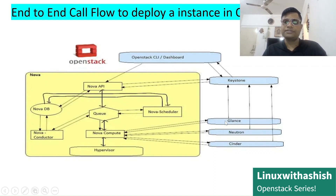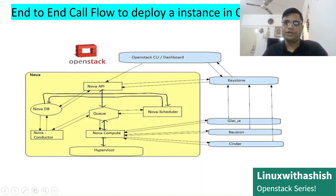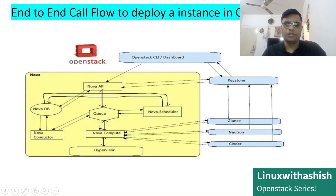After getting all relevant information from the internal Nova components, Nova Compute talks to Glance and asks for the image. Glance verifies with Keystone whether the auth token is valid and the request is legitimate. Keystone confirms and instructs Glance to provide the image, so Glance provides the image metadata to Nova Compute. Nova Compute then asks Neutron to provide an IP address, and Neutron again verifies the auth token with Keystone before providing the IP address to Nova.